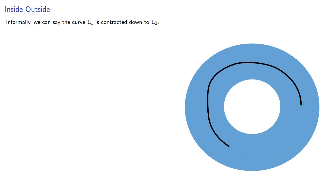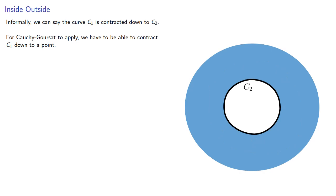Informally, we can say the curve C₁ is contracted down to C₂. For Cauchy-Goursat to apply, we have to be able to contract C₁ down to a point. Otherwise, we'll get hung up on an inner boundary curve and be unable to say anything about the value of the integral—at least not yet.